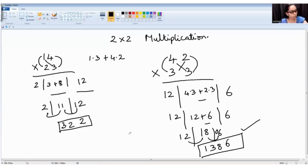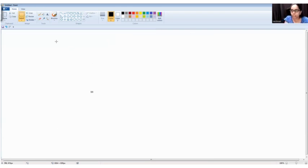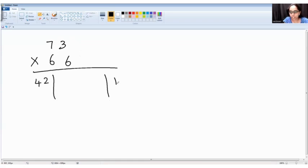Let's see few more examples. For example, 73 into 66. 7 into 6 is 42. 3 into 6 is what? 18.